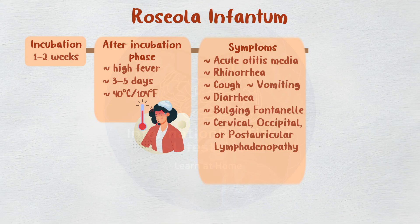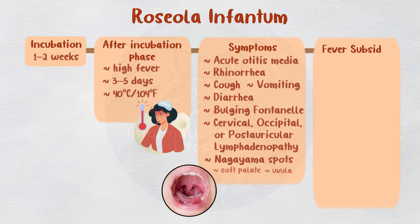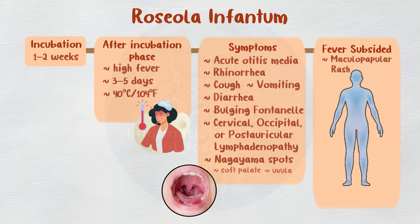Additional symptoms during the feverish phase include cervical, occipital, or posterior lymphadenopathy, a protruding fontanelle, and Nagayama spots — tiny red spots on the soft palate and uvula. Once the fever has subsided, pink or red maculopapular spots appear, initially affecting the neck and trunk before extending to the face and limbs. The rash often resolves in 1 to 2 days, though occasionally it may disappear in as little as 2 to 4 hours.